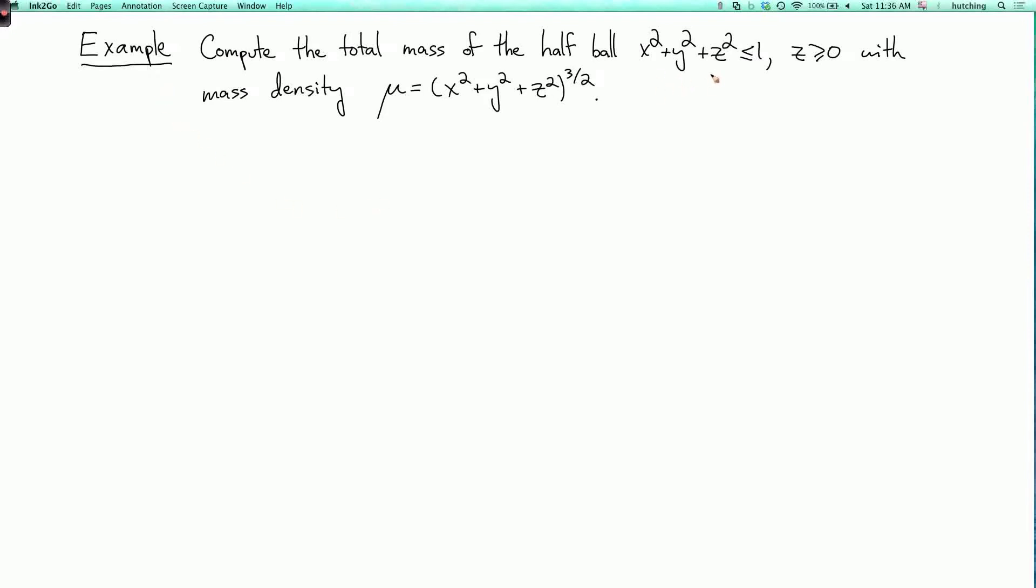So it's where x squared plus y squared plus z squared is less than or equal to 1, and z is greater than or equal to 0, where the mass density is x squared plus y squared plus z squared to the 3 halves. Let's call that mu.